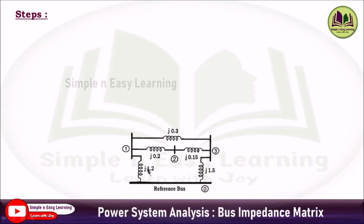We are going to consider all the reactances in the diagram: j1.2, j0.2, j0.15, j1.5, and j0.3 — so there are five reactances. We are going to start the problem from the reference bus, then the first bus, then the second bus, the third bus, and so on.